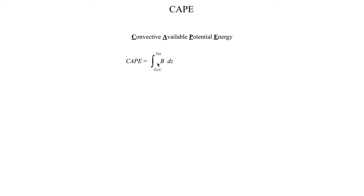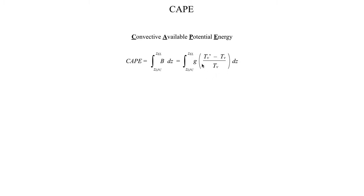CAPE is calculated by taking the buoyancy equation from segment 1 and integrating it from the height of the level of free convection to the height of the equilibrium level. Written out explicitly, that's what that integral looks like. The temperature terms here are functions of height — you have a function for the air parcel temperature with height and a function for the ambient environment with height. This form of the equation is not that nice to work with.